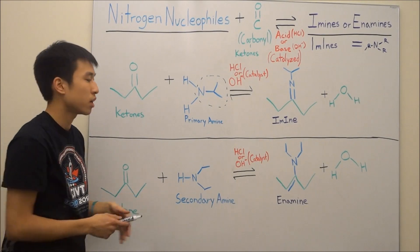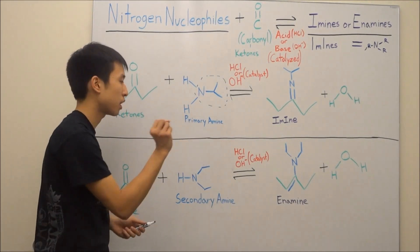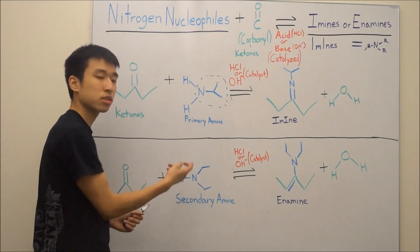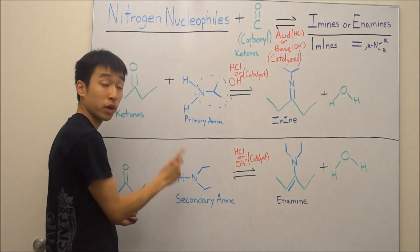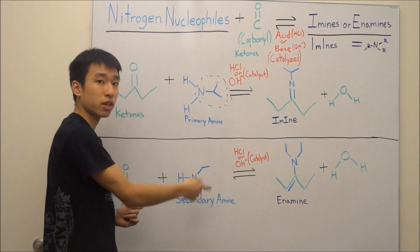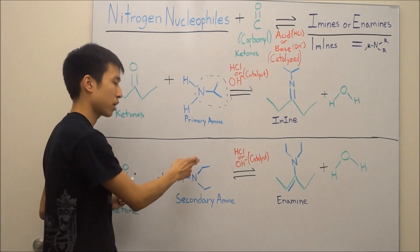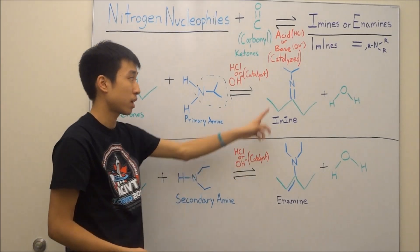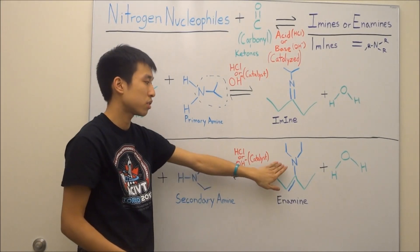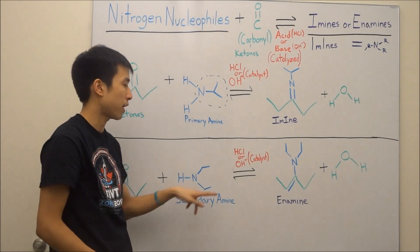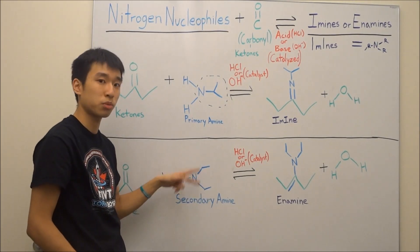But if you have a secondary amine and you still have to throw away those two bonds, well, you only have one hydrogen in this case and two carbon chains. So, it's not really worth it to throw away a carbon chain and maintain that double bond. So, instead, the nitrogen only throws away one hydrogen and keeps both of the R-group carbon chains.